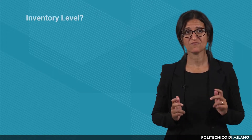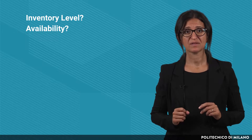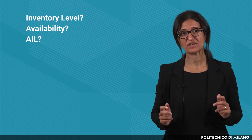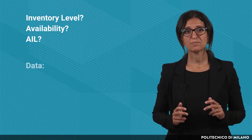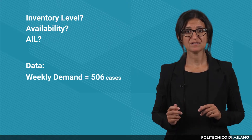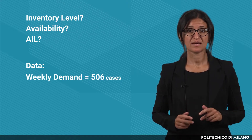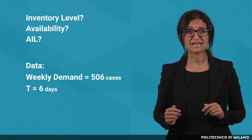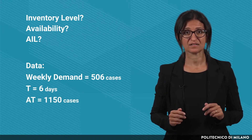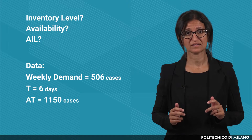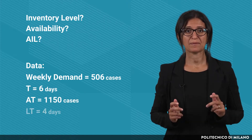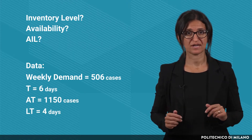Let's see now an example. The objective is to represent the expected pattern of both the inventory level and availability, and to identify the average inventory level. The input data are: weekly demand equal to 506 cases, t equal to 6 days, availability target equal to 1150 cases, and replenishment lead time equal to 4 days.